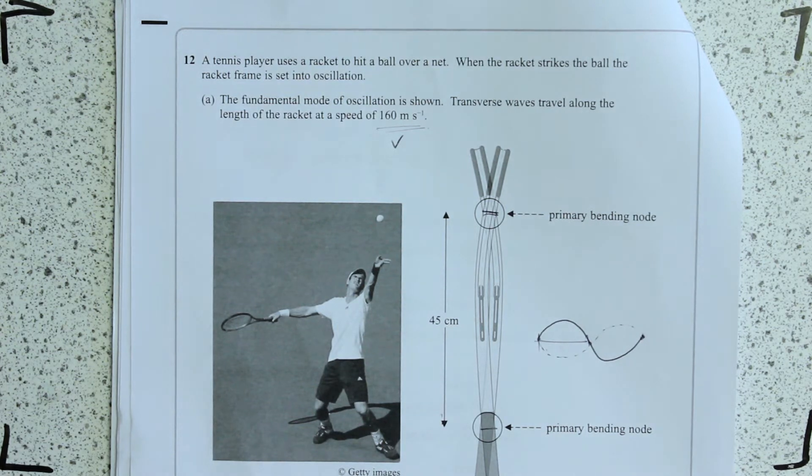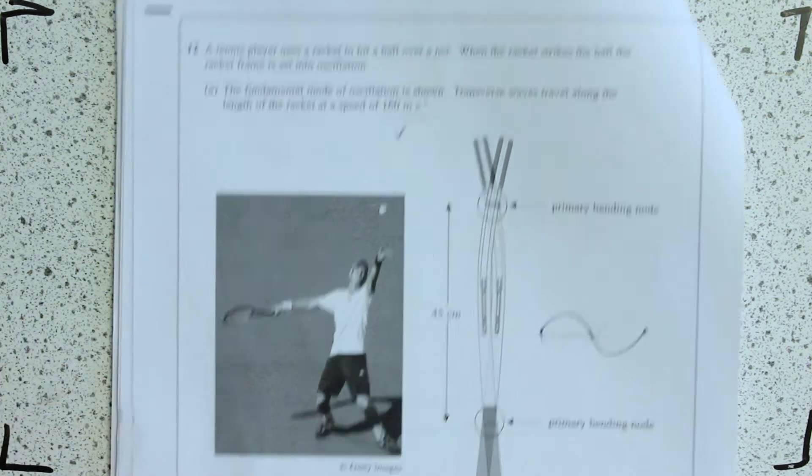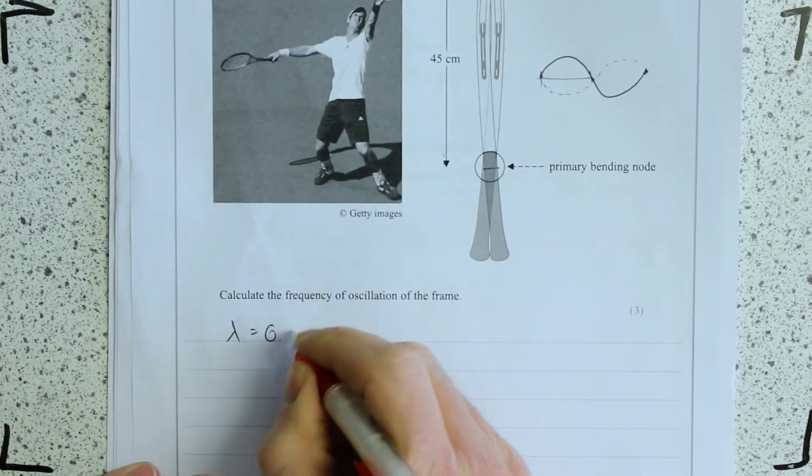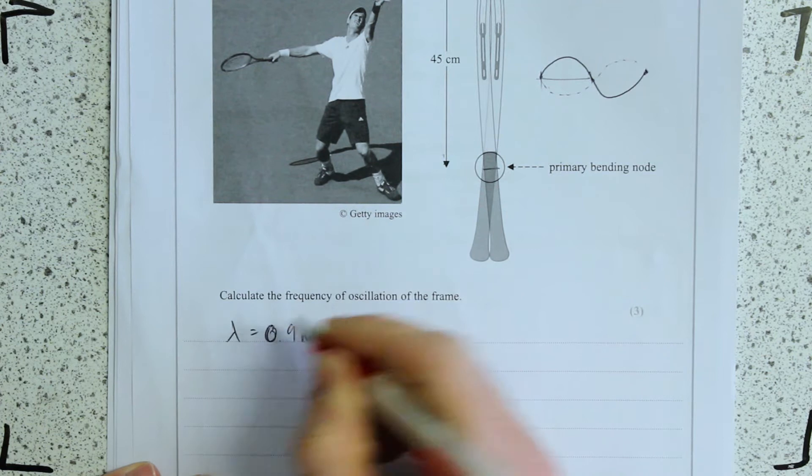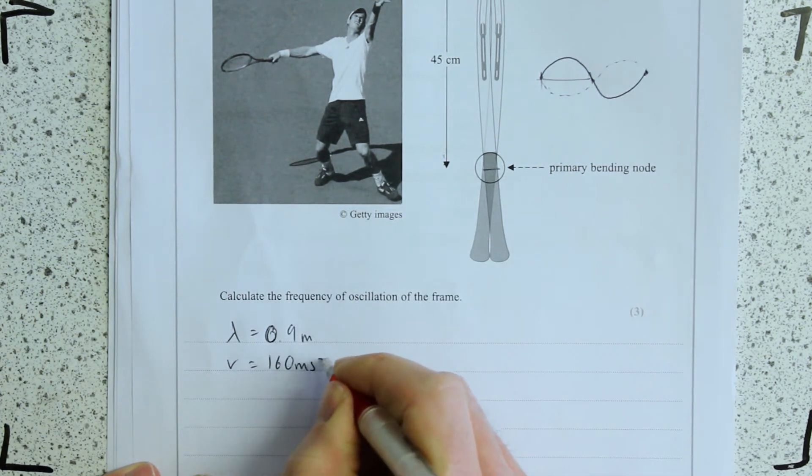So a full wavelength is 90 centimetres, or rather 0.9 metres. And wave speed is 160 metres per second.